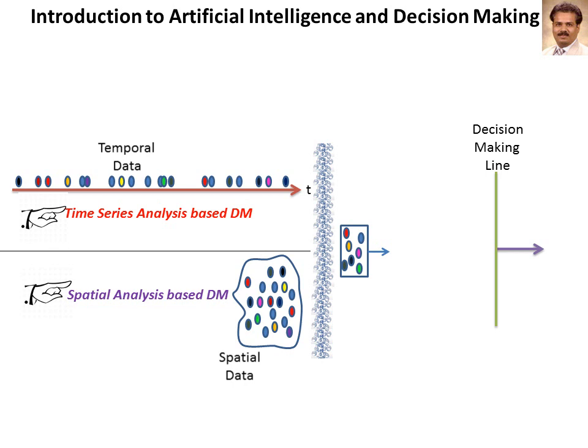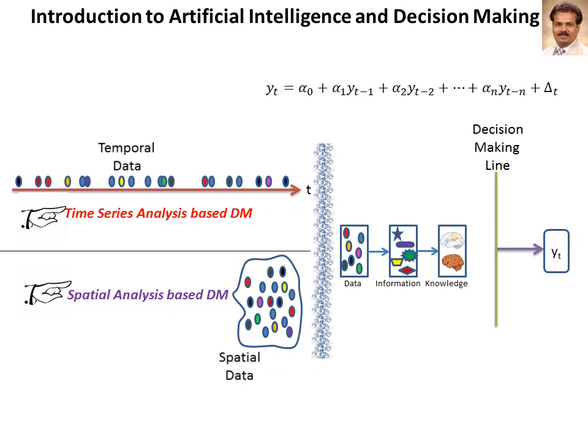Data is passed through a layer called the refinement layer. The refinement layer is simply a formatting procedure. Data are then combined to form information. Subsequently, knowledge is built from the information. Using the knowledge, a decision is made. More data will provide more information, which in turn will establish more knowledge. Thus, there is a direct relationship between knowledge and data.